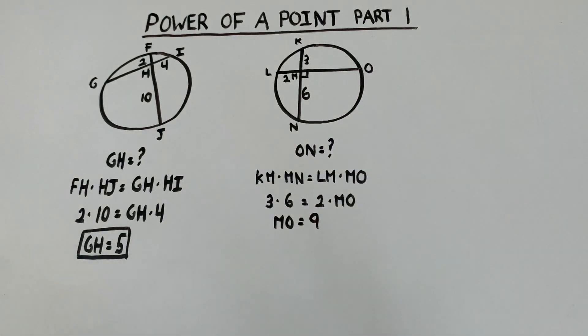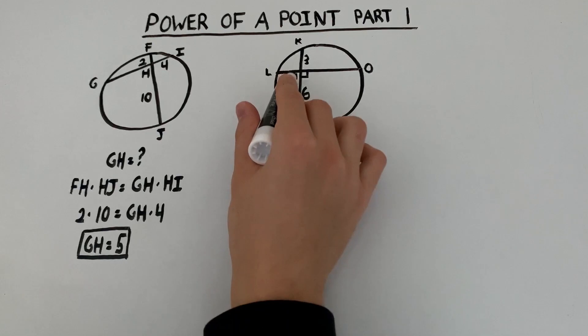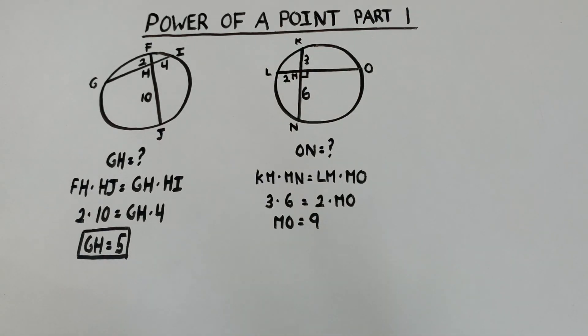Now we weren't asked to find MO, we're asked to find ON. So how did that help? Well this problem is an example of using everything you know, so it's not just a one-step problem, this is actually going to be a two-step problem. And it's time for us to use the very useful Pythagorean theorem. Because take a look at triangle NMO. You'll notice it's a right triangle.